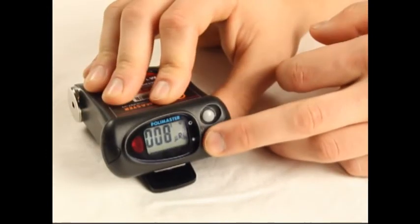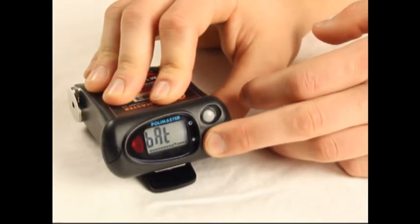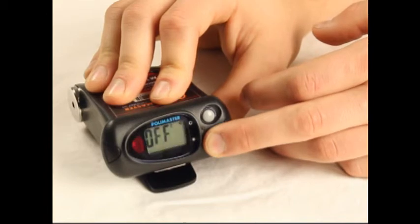To turn the detector off, press and hold the Light button for five seconds until the LCD screen displays the off message.